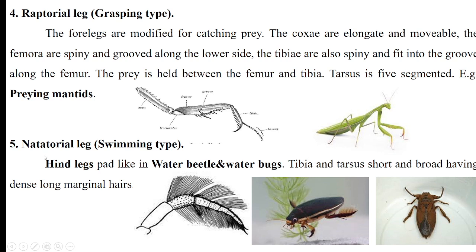Natatorial legs are modified for swimming purposes and are present in aquatic insects. The hind legs of water beetles and water bugs have a short tibia and tarsus, but with long dense marginal hairs that help these insects in swimming.